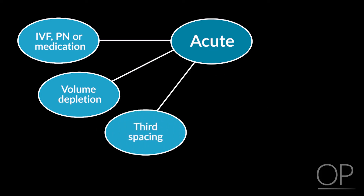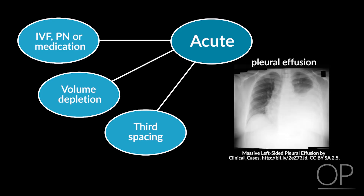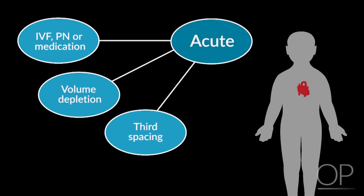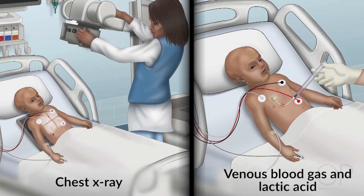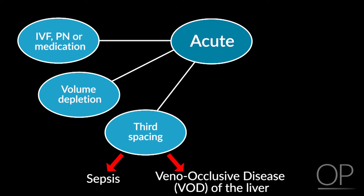If there's evidence of third spacing, then consider how much excess fluid the patient is carrying and where it is. If the respiratory rate is increased and the oxygen saturation is decreased, it's appropriate to worry about pulmonary edema or pleural effusions. Obtain a chest x-ray and VBG to assess the patient's respiratory status further. If the heart rate is increased, or heart sounds are distant, or pulse is weak, it's appropriate to worry about a pericardial effusion. Obtain a chest x-ray and VBG and lactic acid to reassess the cardiac status. Other causes of third spacing in transplant include sepsis or veno-occlusive disease of the liver. Consider further evaluation if evidence points towards those indications.